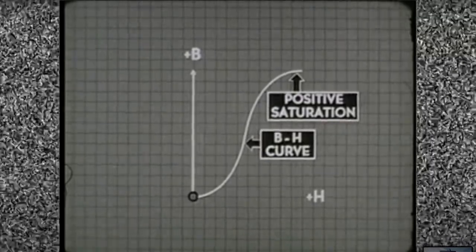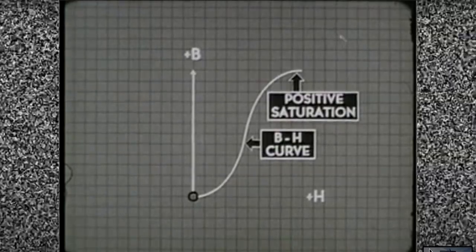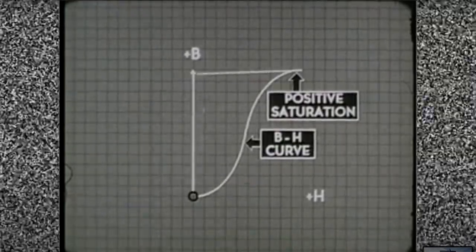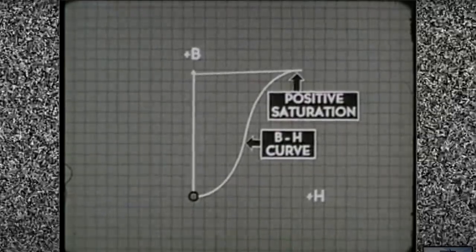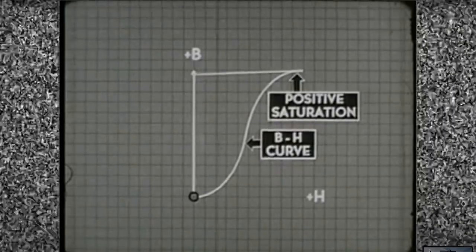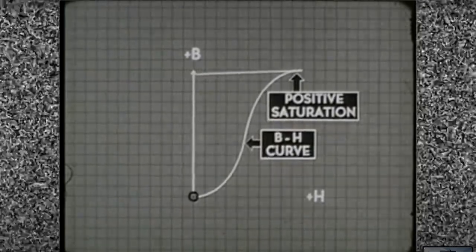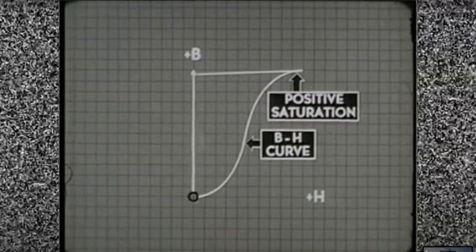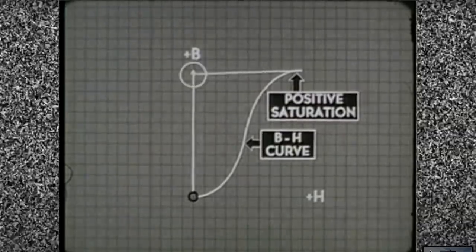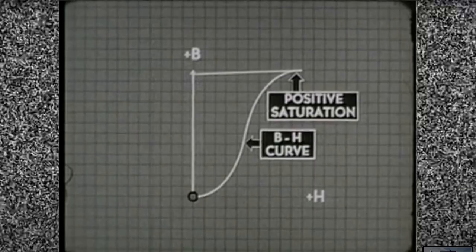Here's how we plot this fact on the graph. The BH curve is brought back to the zero line on the horizontal scale. Watch the difference in flux density on the vertical scale near the plus B.